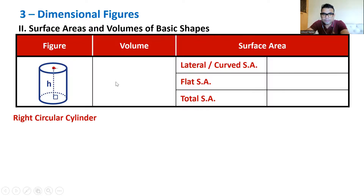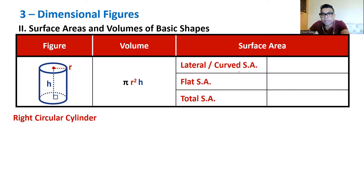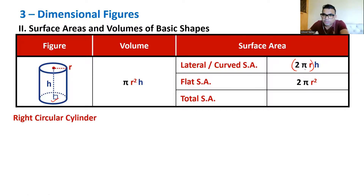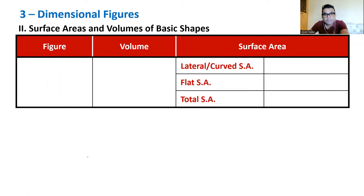For a cylinder (circular prism) with radius r and height h: volume = πr²h (base area × height). Lateral or curved surface area = 2πr × h (perimeter of base × height — if you open the cylinder, you get a rectangle with length 2πr and breadth h). Flat surface area = 2πr². Total surface area = 2πrh + 2πr² = 2πr(r + h).